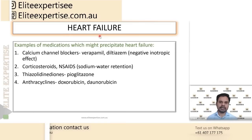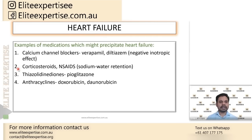Rosiglitazone was completely removed from the market due to high risk of fluid retention, leading to uncontrolled hypertension and heart failure. Patients with heart failure should not be on thiazolidinediones. Anthracycline antibiotics — doxorubicin and daunorubicin — are anti-cancer drugs with cardiotoxic effects; one of those effects is precipitating heart failure. These are key drug classes that can trigger the condition.